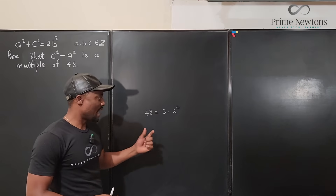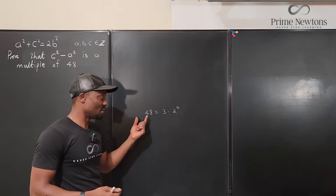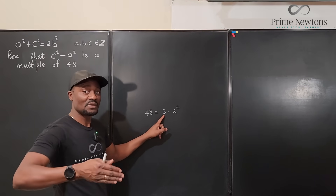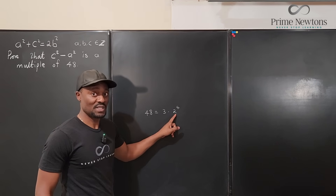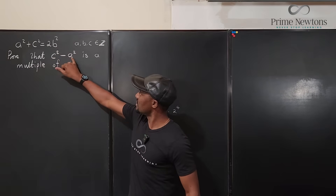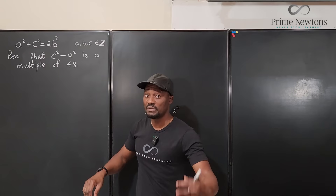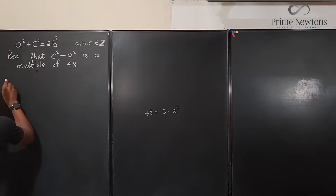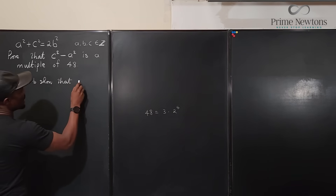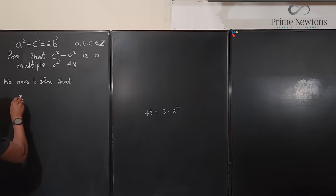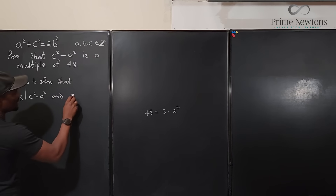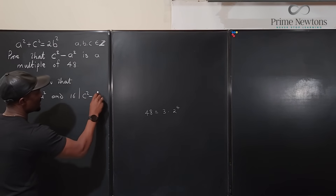Whenever you're trying to show that something is divisible by 48, it is smart to break it down into two concepts: firstly, is it divisible by 3? If yes, you've solved half of your problem. Then, is it divisible by 2⁴, which is 16? So we're going to show that c² - a² is divisible by 3 and also divisible by 16. We need to show that 3 divides c² - a², and 16 divides c² - a². There are two parts to this journey.